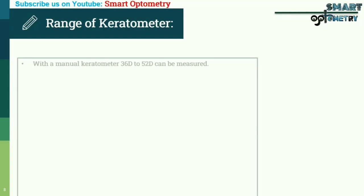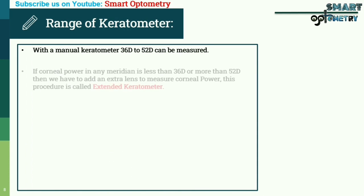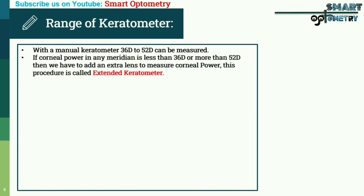The range of a manual keratometer is 36 diopters to 52 diopters. If the corneal power in any meridian is less than 36 diopters or more than 52 diopters, then we have to add an extra lens to measure corneal power.